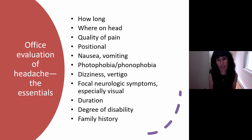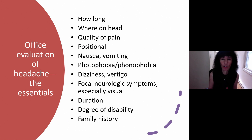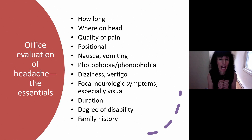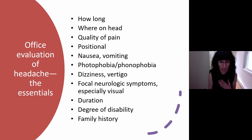Ask about accompaniments: nausea, vomiting, sound or light sensitivity, dizziness — which is separate from vertigo. Sometimes you have to define vertigo for a patient because people who are vertiginous always think they're dizzy. Are there focal neurologic symptoms, especially visual — double vision, blurry vision, numbness or weakness on half the body? How long does the headache last untreated? What's the degree of disability? Especially for migraine, is there a family history? More and more of these headaches are genetic, which can be a helpful diagnostic clue.